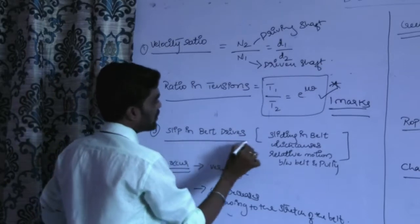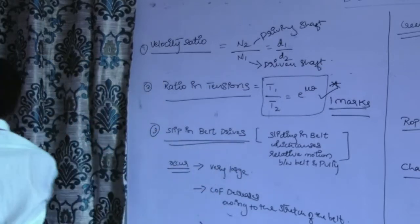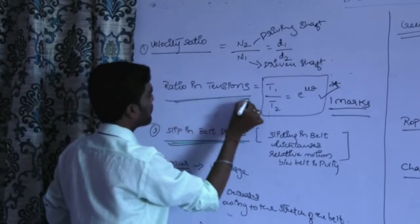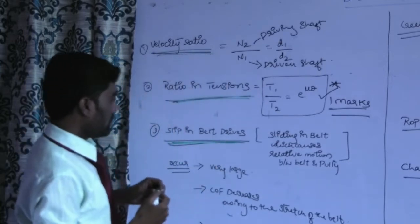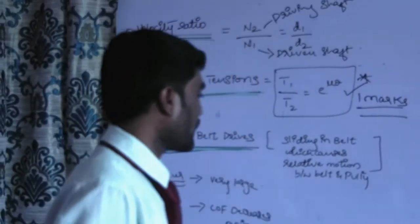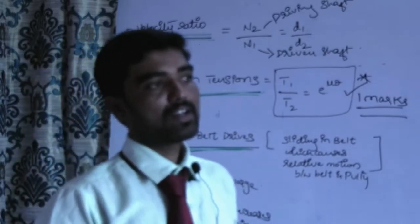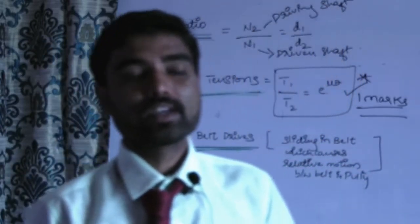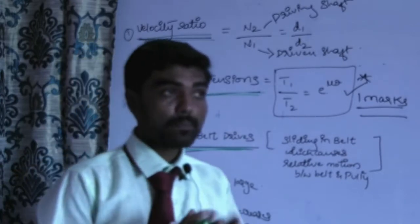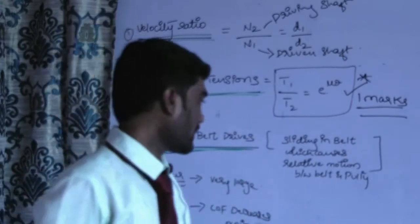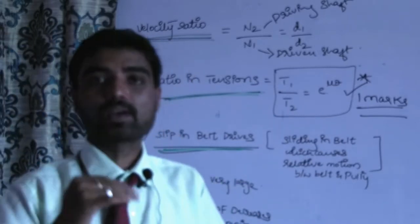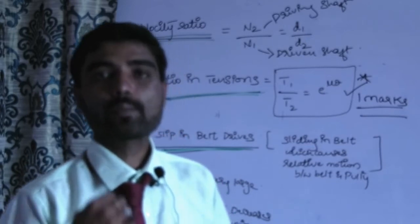The next concept is slip in belt drives. Slip in belt drives refers to the sliding in the belt which causes relative motion between the belt and the pulley.